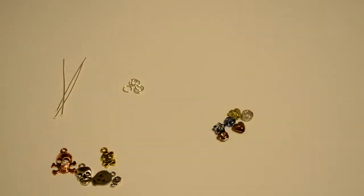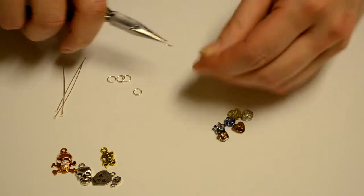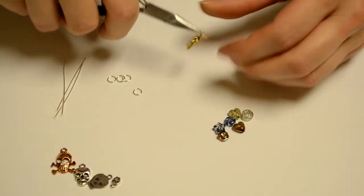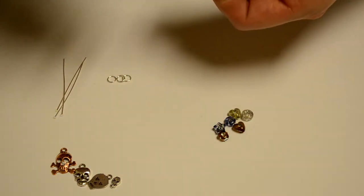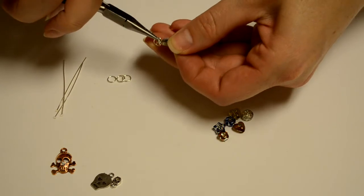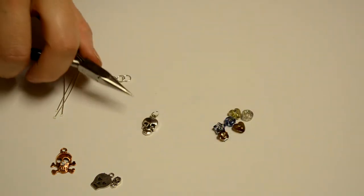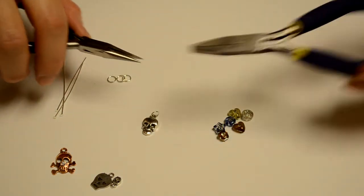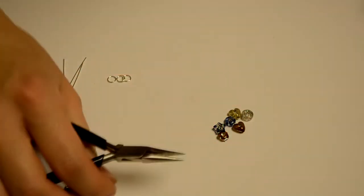I've already put my jump rings on my clasp. To make the skull charms, take the jump ring, pull it apart, put the skull on, and we have a skull charm. I'm going to do that with 15 skulls. You can use two sets of pliers to do that motion. I just use my fingers.